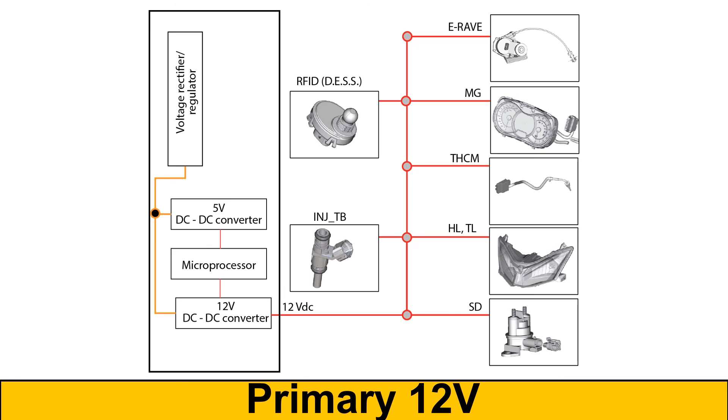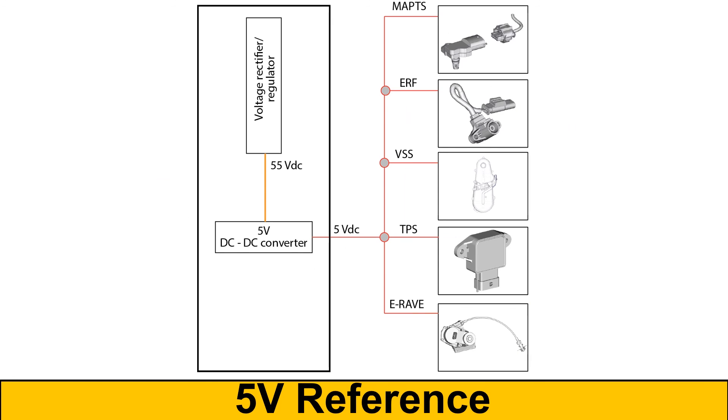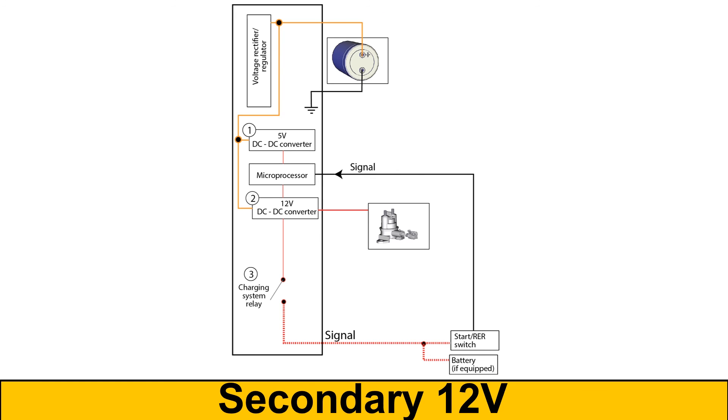The primary 12 volt system includes components that are necessary but not critical for optimal engine and vehicle functions. The 5 volt system includes reference voltage for engine management sensors. The secondary 12 volt system includes optional vehicle accessories and non-critical components and functions.